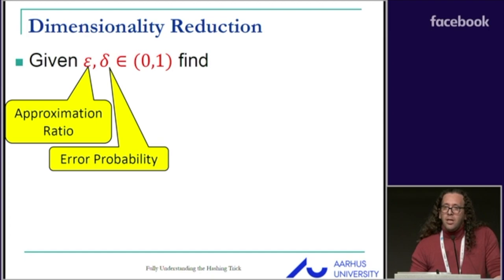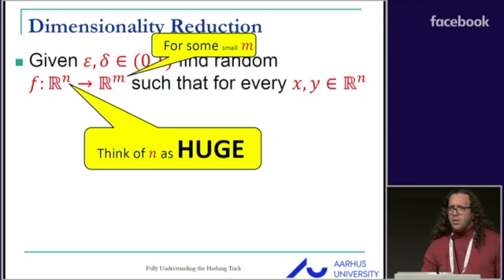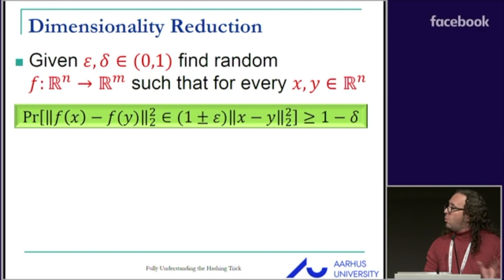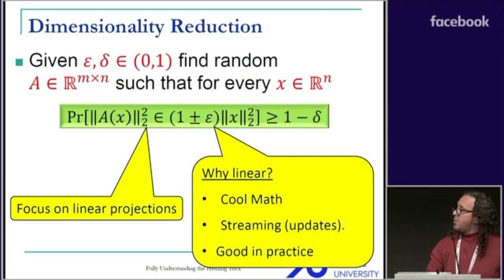This is exactly the problem dimensionality reduction comes to solve. Suppose we have a desired approximation ratio and error probability. We want to find a projection from the large feature dimension to a smaller target dimension, such that for every two vectors, the distance between them is preserved approximately with high probability. In this talk, I will focus on linear projections, which means I can focus on norm-preserving projections.